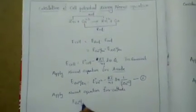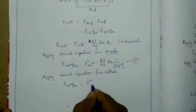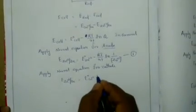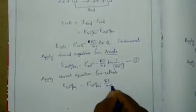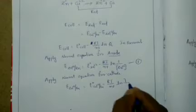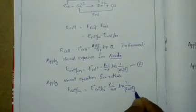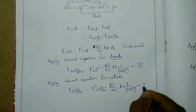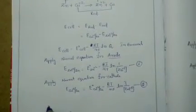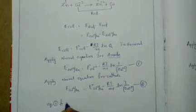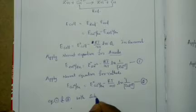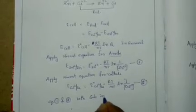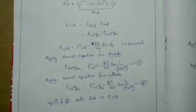Next, apply the Nernst equation for the cathode: E(Cu²⁺/Cu) equals E⁰(Cu²⁺/Cu) minus RT by nF times ln(1 / [Cu²⁺]). This is taken as equation number two. Now substitute equations one and two into E cell.